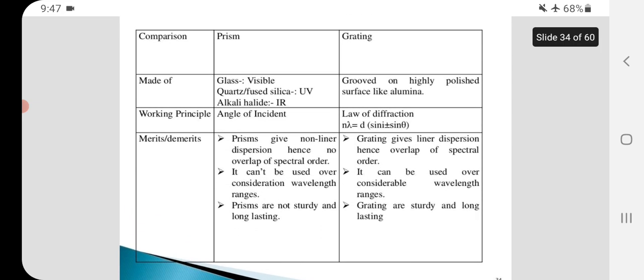These are the comparison of prism and grating. Prisms are made from glass and gratings are made of polished surface like alumina. Working principles: angle of incidence in prism versus law of diffraction in gratings.